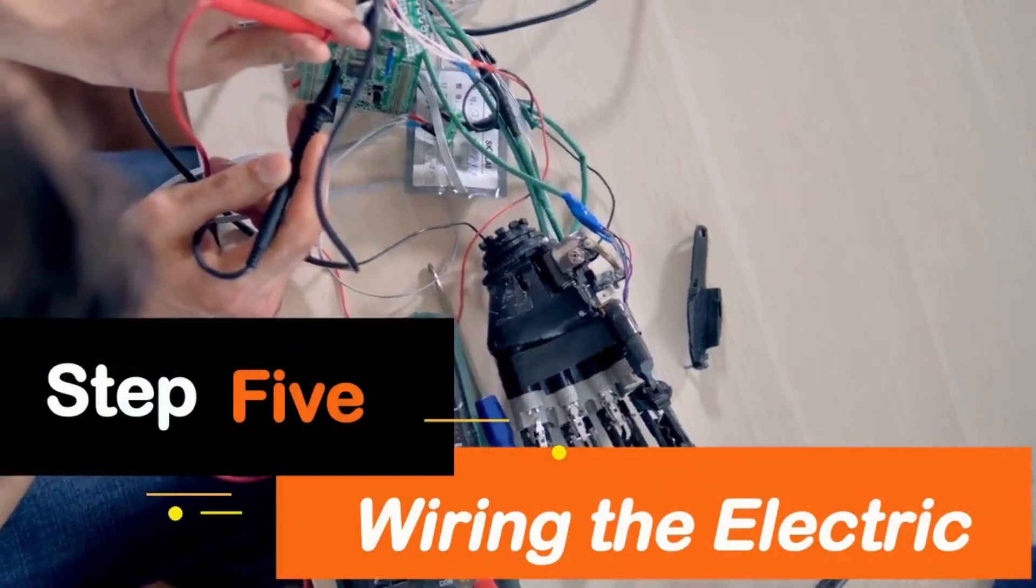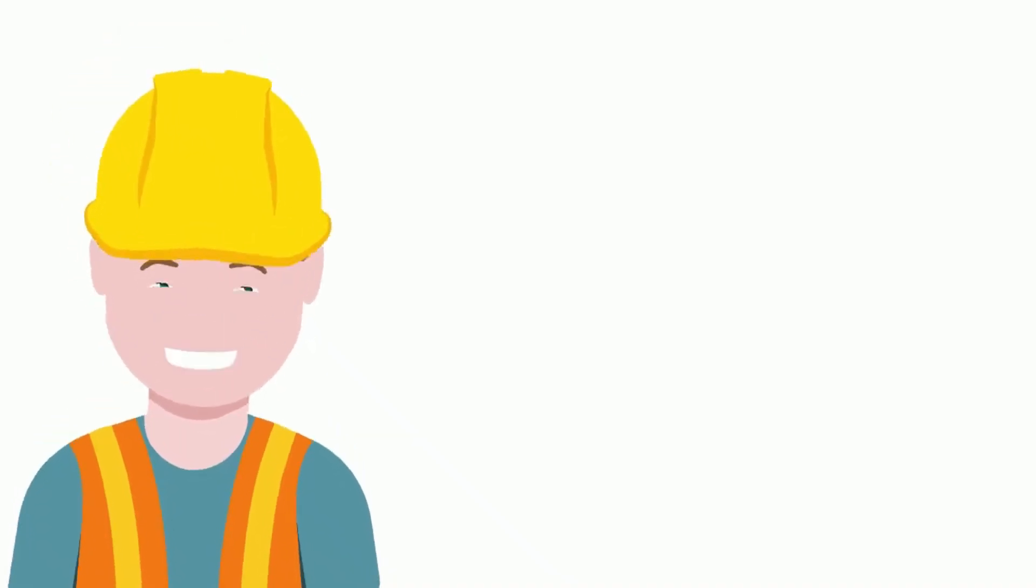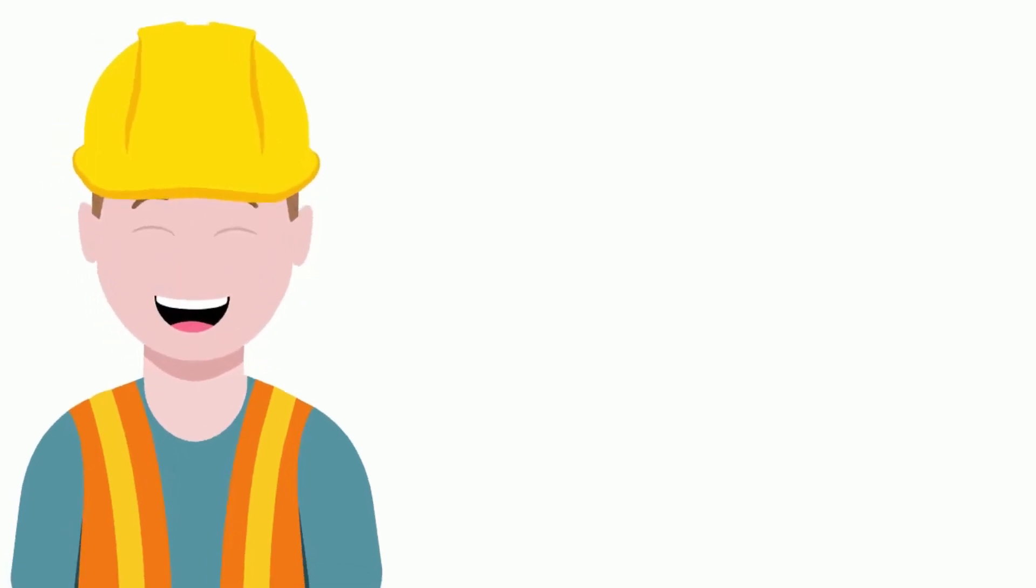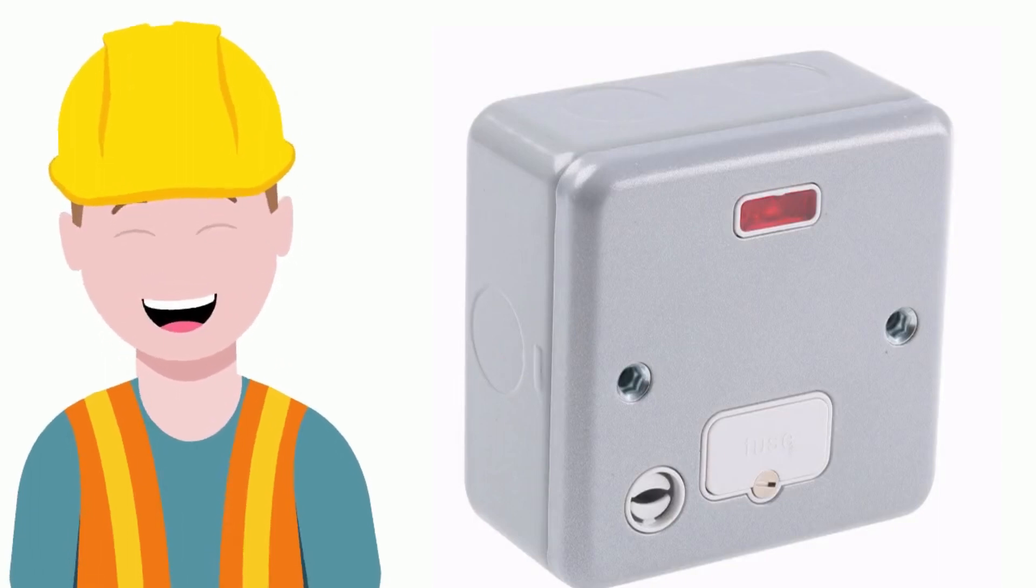Step 5: Wiring the electric. It is advisable to hire a qualified electrician to install your feed from the mains power, using its own fuse and finishing off with an unswitched fuse spur.